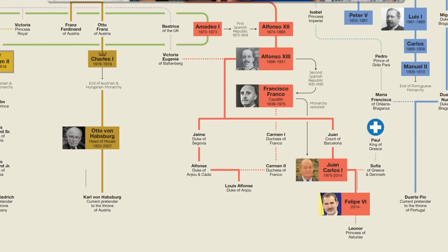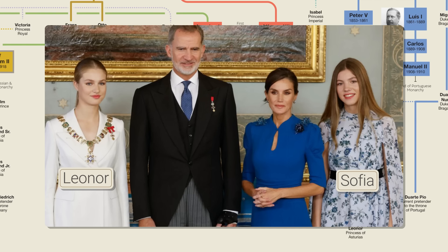His eldest daughter Leonor is the heir presumptive to the Kingdom of Spain and currently holds the title Princess of Asturias. However, if her father has a son, that son will then be first in line to the throne, not Leonor. Although it doesn't look likely, and it seems that Leonor will be the first Queen Regnant of Spain since Isabella II.